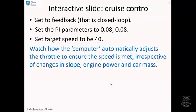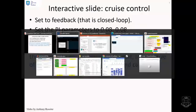First example: we'll look at cruise control, which we've looked at before. We're going to set the option to feedback, which is closed loop, and we're going to set the PI parameters both to be 0.08. They aren't perfect, but they're good enough. What we want you to do is watch how the computer automatically adjusts the throttle. You'll see it moves by itself because the PI is choosing the value it should have to ensure the speed is met, and this is irrespective of changes in slope, engine power, and car mass.